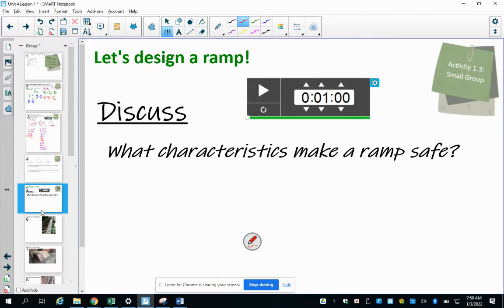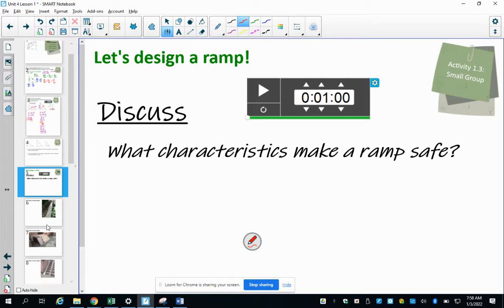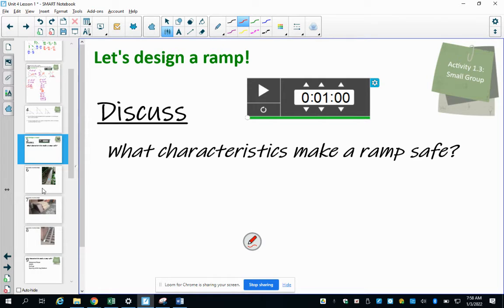Okay, then what we're going to be doing in activity 1.3 is small group work. So if you are watching this at home, you can just do this by yourself. But just think about some characteristics with your partner if you're in class that make a safe ramp. So spend one minute looking for characteristics or thinking about characteristics of a safe ramp, as in to help a wheelchair, somebody in a wheelchair, get into a building, instead of stairs. So what would make a ramp safe? So you can pause the video and then come back and I'll show you a couple examples.